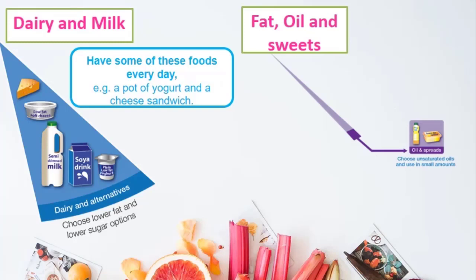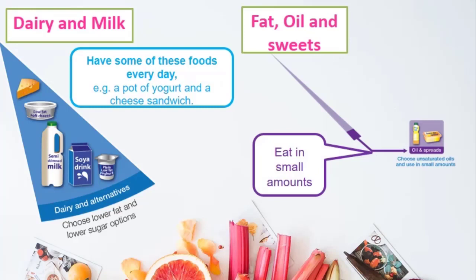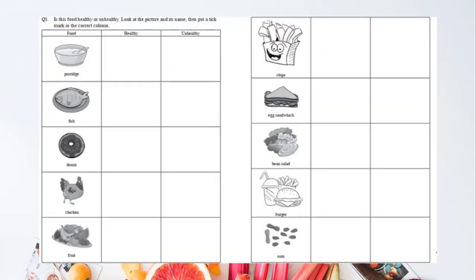Now the last group I need to mention is fats, oils, and sweets. Take them in small amounts — I know you like to have candies and cakes, but eat them in small amounts. Now come to the worksheet and recall all the information I just told you, and sort out these food items into healthy and unhealthy groups.